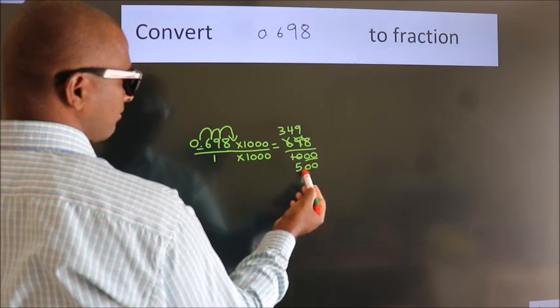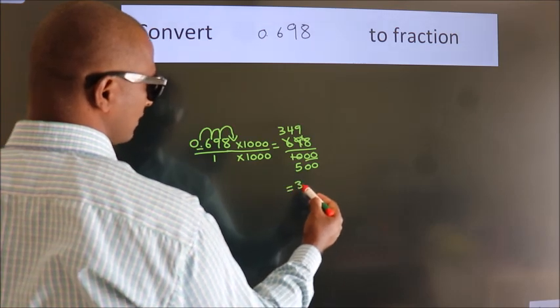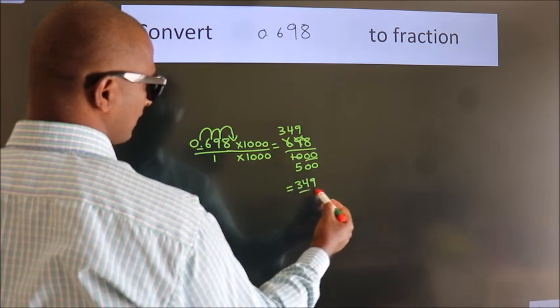Further cannot be simplified. So our fraction is 349 by 500.